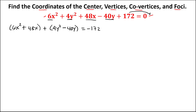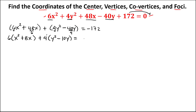We need to put the constant outside. For x, we have 6 times (x² + 8x), since 48 divided by 6 equals 8. Then for y, we have 4 times (y² − 10y), since 40 divided by 4 equals 10. This equals negative 172.